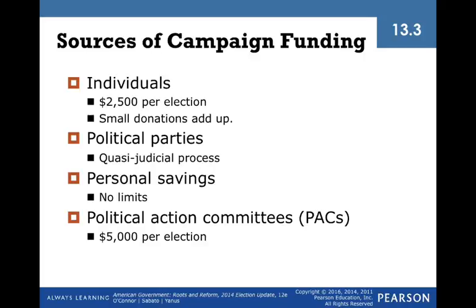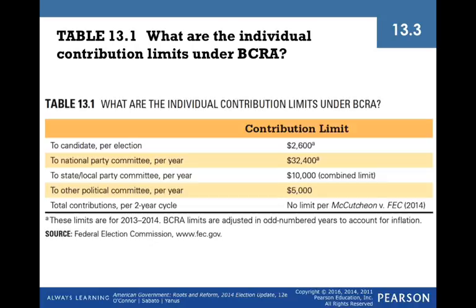Since the Supreme Court ruled that no limits could be placed on personal financing of campaigns, some wealthy candidates have spent tens of millions of dollars of their own money. Interestingly, these wealthy self-financed candidates rarely win. PACs — political action committees — are fundraising organizations created by economic or ideologically driven groups. PACs can give up to $5,000 per candidate per election. In 2012, PACs contributed $32 million, 61% of which went to Republican candidates and 39% to Democrats. PACs are controversial because they are viewed as special interests buying politicians. It would be well worth your while to study the BCRA contribution limits table.